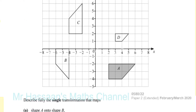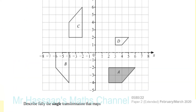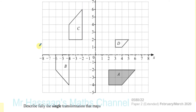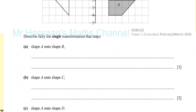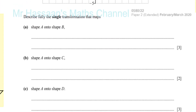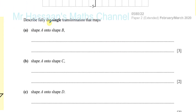Here we have a grid with a shaded figure A, and then figures B, C, and D, which are in some cases congruent and in some cases similar to A. You've got to describe fully the single transformation that maps shape A onto each of the other shapes.